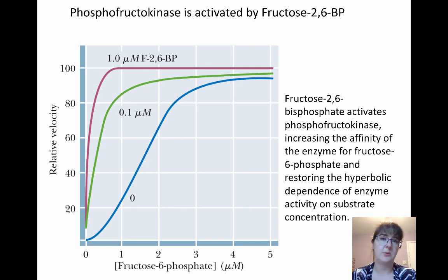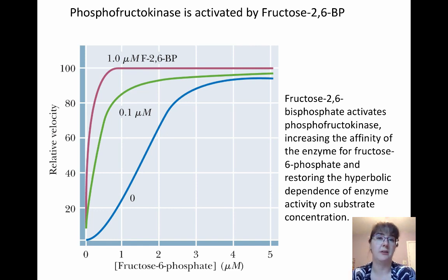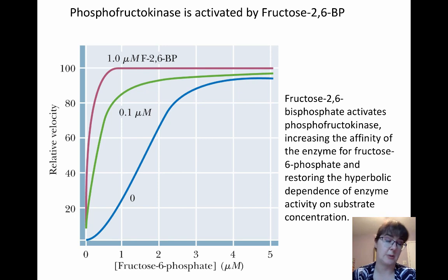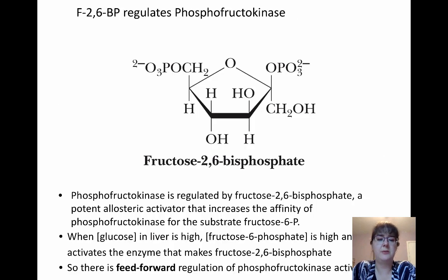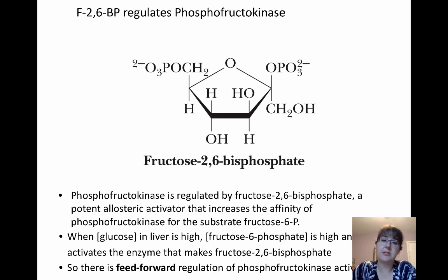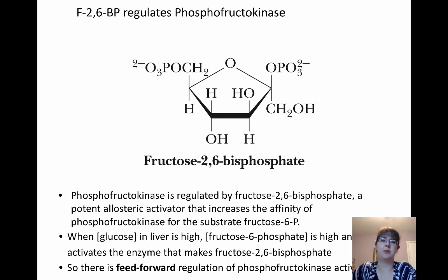Whenever the cell has too much glucose, fructose-2,6-bisphosphate will help activate phosphofructokinase to essentially try to get rid of some of that glucose. It's basically signaling that we have too much sugar and need to process it somehow — and apparently storing things as glycogen is not going fast enough. So when glucose in the liver is high, you'll see more fructose-6-phosphate, which will then activate the enzyme that makes fructose-2,6-bisphosphate. This is technically a feed-forward regulation, where having a lot of glucose spurs the process to go forward.